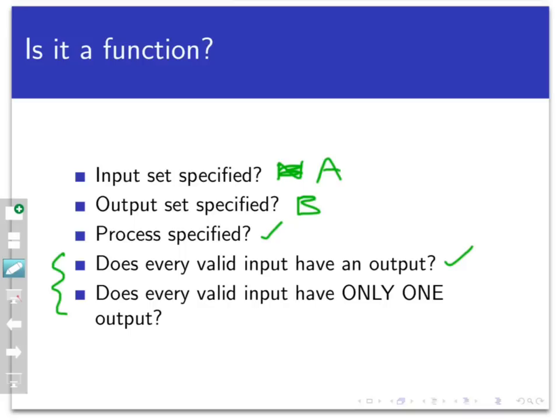And secondly, or fifth in the list here, importantly, does every valid input have only one output? I think the answer to that would be certainly yes. A single person with a first and middle and a last name is not going to have two different sets of initials. So this is really a function because it satisfies all five of these properties, and especially the last two.